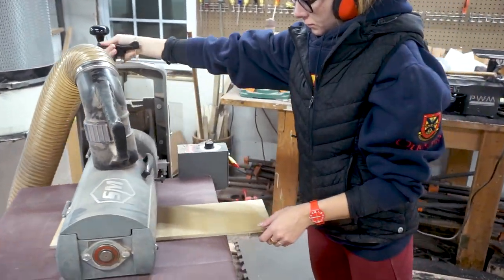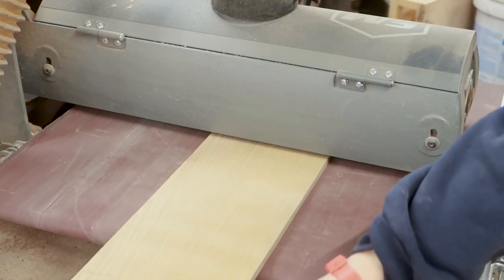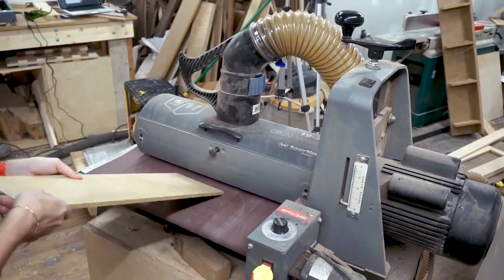The idea is that we're going to use a laser to engrave some of Kat's artwork into the cover of the book so we're just sanding it down to the final thickness.